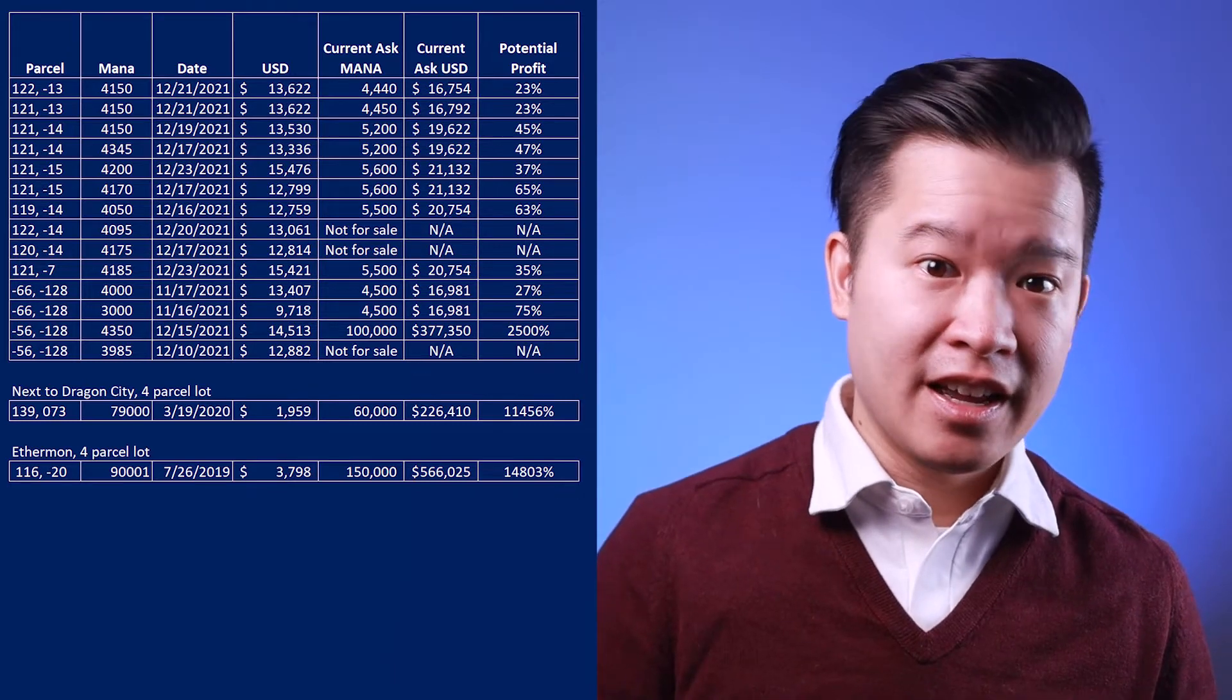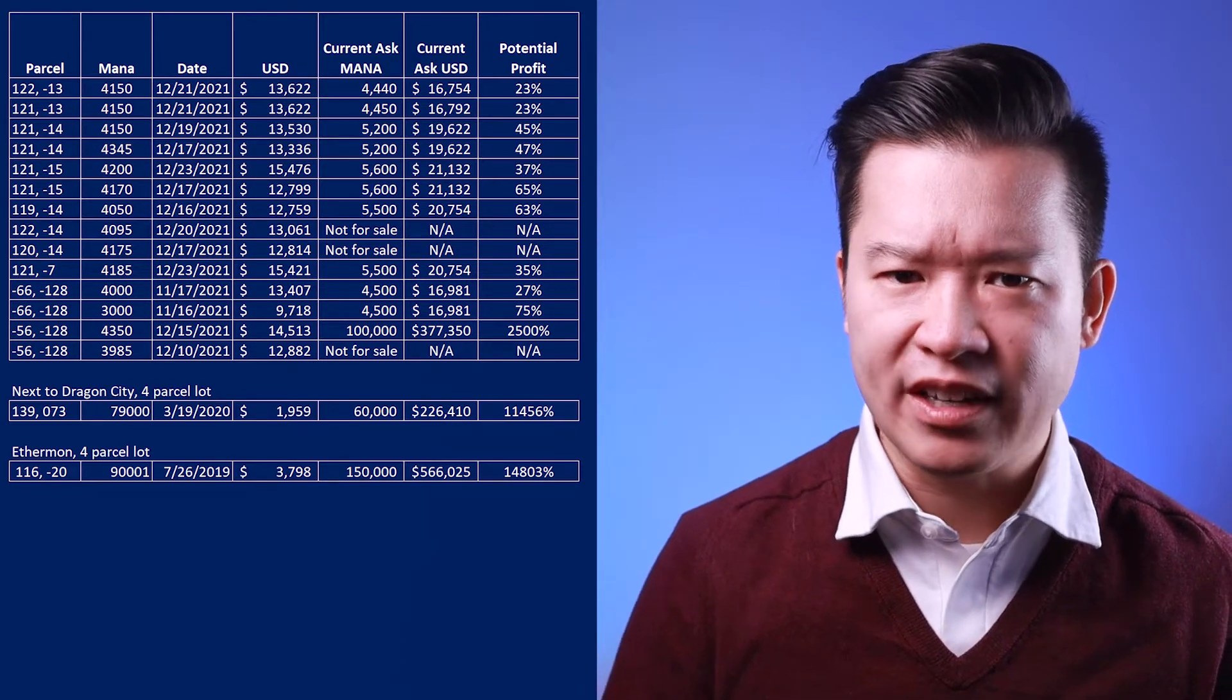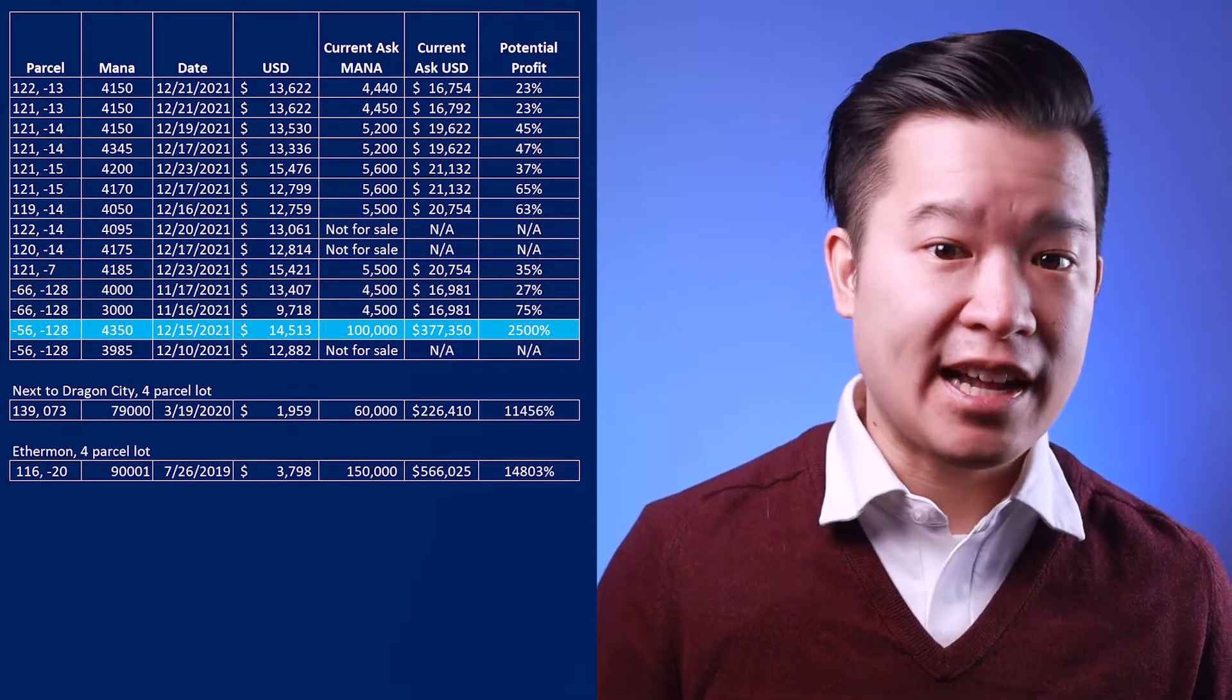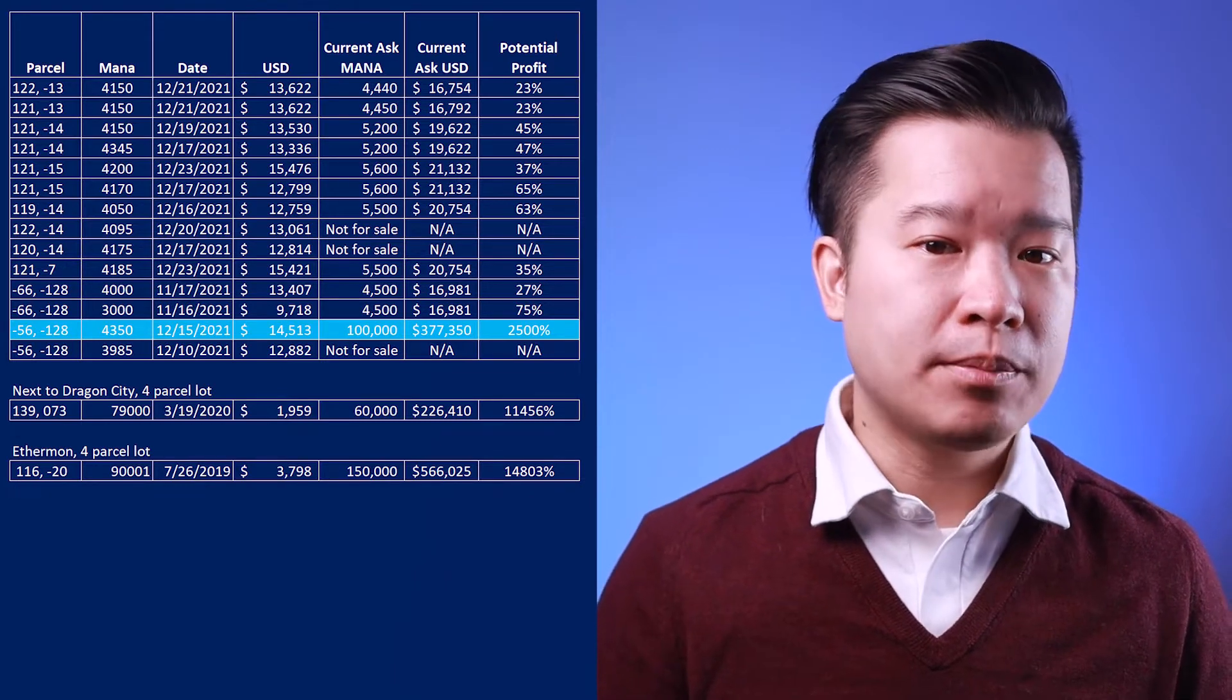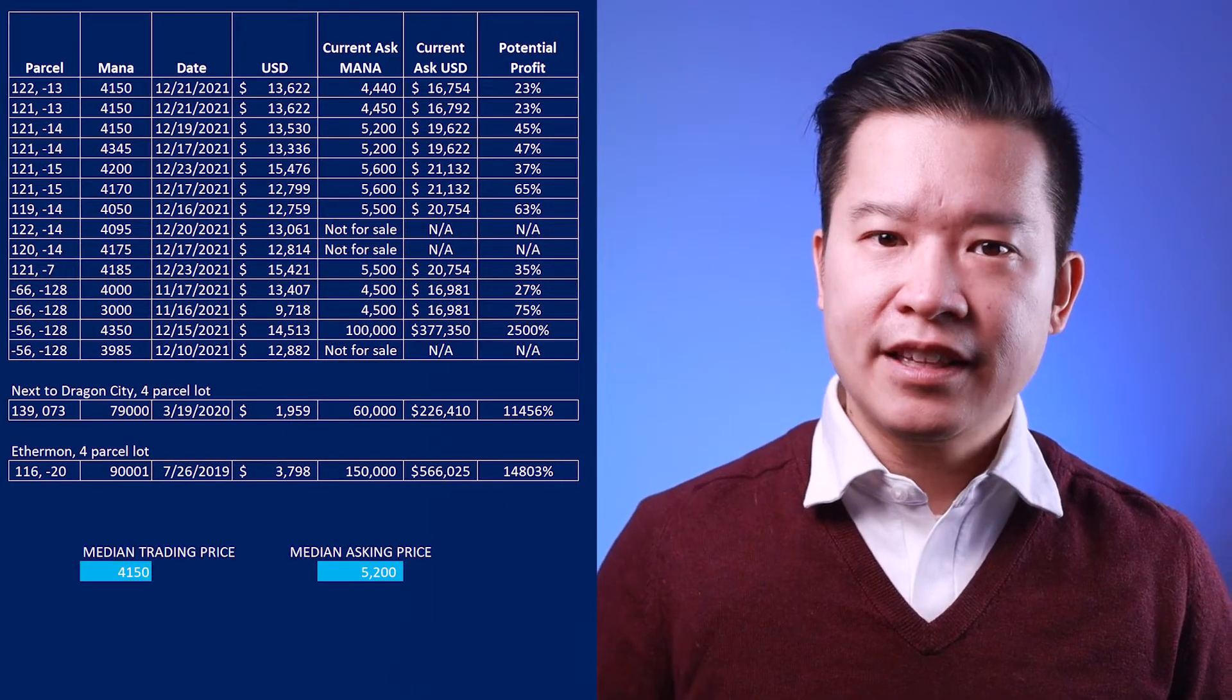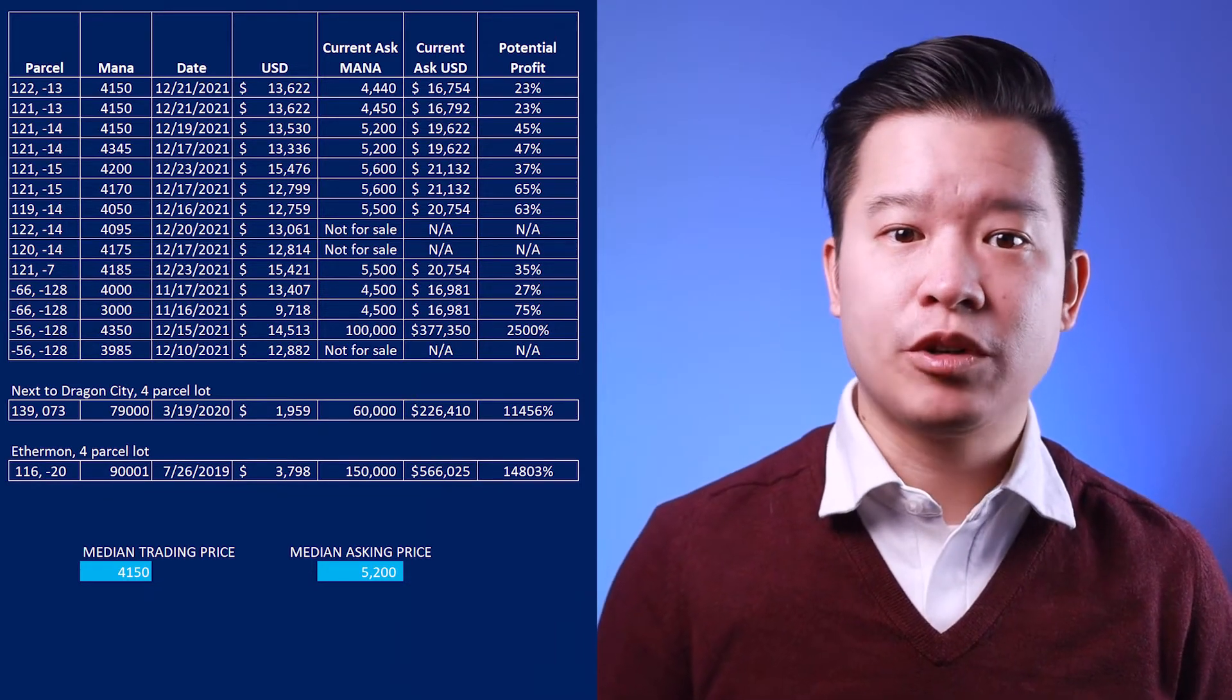As I suspected, there is a hotbed of activity in this region, and all the parcels have traded at least once in the last week, some flipping for more in just one day. But then you've got this one parcel that just traded for 4,350 mana on December 15th, and it's now asking 100,000 mana or $377,000 US dollars. Probably not getting that price anytime soon, and it shows that the asking prices don't necessarily dictate the value. But I think this is currently a seller's market, and single parcels are clearly trading in the low 4,000 range and continues to creep up every day.